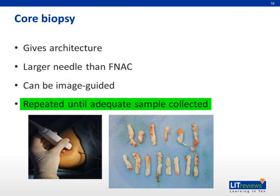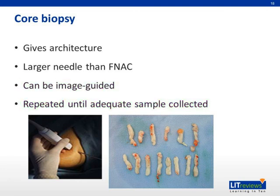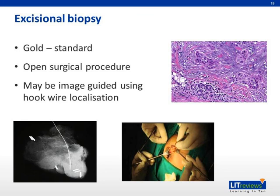Excisional biopsy, or surgical biopsy, is the gold standard method for tissue diagnosis. The entire mass should be excised with a one centimeter margin of normal tissue. Non-palpable lesions may be localized with a wire inserted into the center of the lesion under mammographic or sonographic guidance. Post-biopsy, an x-ray of the lesion with the wire still in situ should be taken. Ideally, the incision should be made such that a future mastectomy can incorporate the biopsy site.